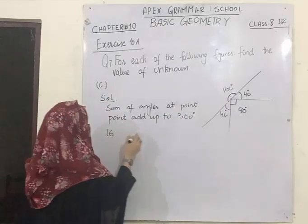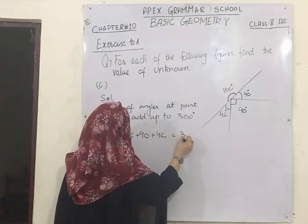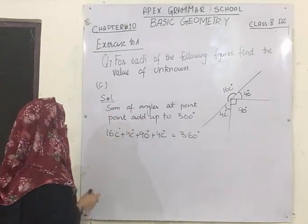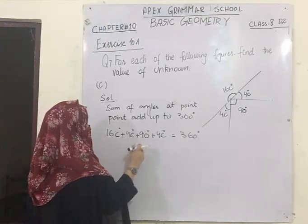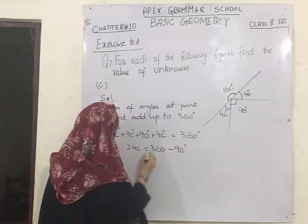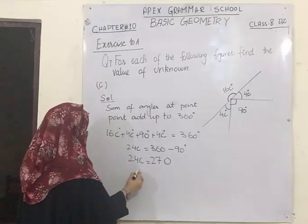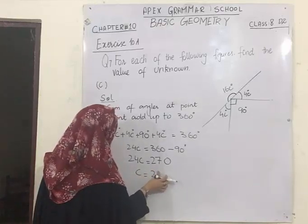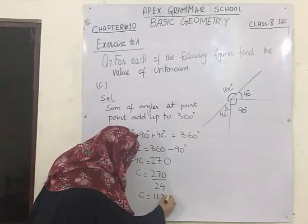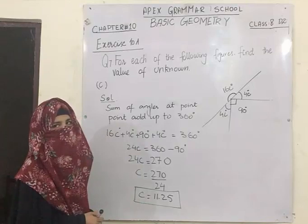Adding all the angles: 16c plus 4c plus 90 plus 4c is equal to 360 degrees. The like terms 16c, 4c, and 4c are added: 16c plus 4c is 20c, and 20c plus 4c is 24c. 90 is being added on one side so it will be subtracted: 360 minus 90 gives 270 degrees. So 24c equals 270 degrees. Since 24 is multiplied with c, dividing on the other side gives c equal to 11.25 degrees.